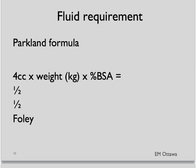The next part is circulation. Remember how burn patients need a lot of fluid because of capillary leak? We use the Parkland formula to estimate their fluid requirement. Remember, this is a very rough guide, and we might have to adjust it based on how the patient is doing. In the first 24 hours, they should get 4 cc times their weight in kilograms times the percentage of total body surface area burned, with half given in the first 8 hours post-burn and the next half over the following 16 hours. We often place a Foley catheter to monitor urine output and guide our fluid resuscitation.